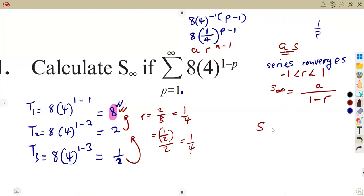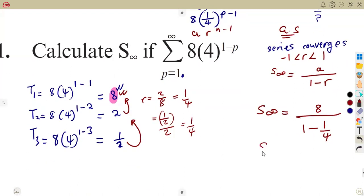Let's determine our sum to infinity. Therefore, our sum to infinity is going to be a, which is our T1, the first term, which is 8 over 1 minus r. Remember, our r is the common ratio which is 1 over 4. So that is going to be 1 minus 1 over 4. The sum to infinity is 32 over 3, which is the same as 10 and 2 thirds.